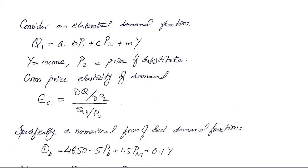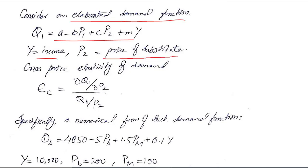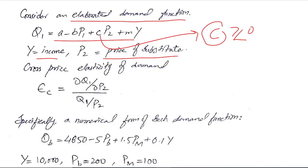Now we apply this numerically to better interpret it. We use the elaborated demand function as we did in the income elasticity of demand. Here, Y is income and P2 is the price of the substitute or complement. The value of C determines the relationship — if C is positive or negative, it tells us the relationship between the two goods; if C equals zero, the goods are unrelated.